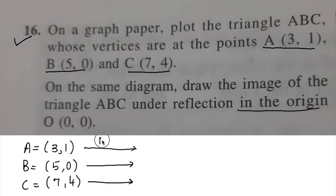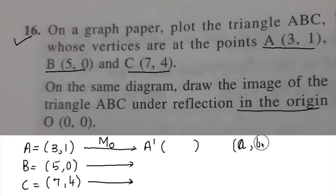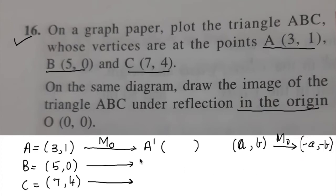We call reflection in the origin Mo. The reflected images will be called A dash, B dash, and C dash. The rule for reflection in the origin is: if we have a point (a, b), then under reflection in the origin it becomes (-a, -b).